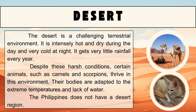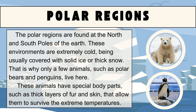Third is the desert. The desert is a challenging terrestrial environment — intensely hot and dry during the day and very cold at night, with very little rainfall every year. Despite these harsh conditions, certain animals such as camels and scorpions thrive here, with bodies adapted to extreme temperatures and lack of water. The Philippines does not have a desert region. Last are the polar regions, found at the north and south poles of the Earth. These environments are extremely cold, usually covered with solid ice or thick snow. Only a few animals, such as polar bears and penguins, live here, with special body parts like thick layers of fur and skin to survive the extreme temperatures.